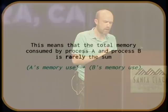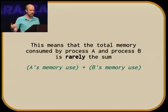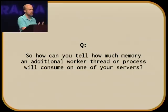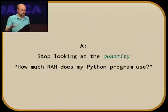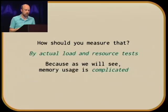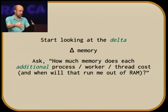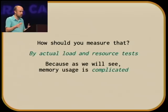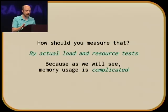How can you tell how much memory an additional worker thread or process will consume on your servers if the OS is letting them share some RAM behind your back? You have to stop looking at the total memory they use and instead look at the delta — run 10 processes, 20 processes, 30 processes, and see how much additional RAM disappears from your system pool. Really, only by doing actual load and resource tests, because the story is going to get even more complicated.